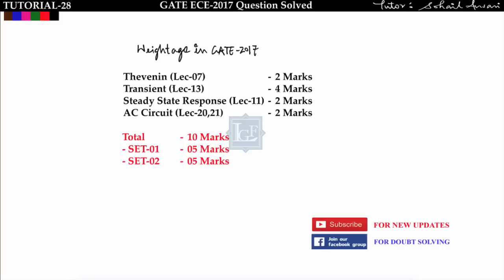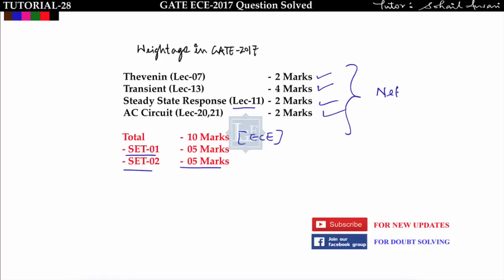To summarize the weightage of topics asked in GATE 2017 EC: Thevenin — 2 marks; Transient — 4 marks; Steady state response (lecture 11) — 2 marks; AC circuits — 2 marks. Total of 10 marks, with 5 marks in Set 1 and 5 marks in Set 2. All concepts have been discussed in the network lectures. If you understood the concepts, please like this video. For doubt solving, join the Facebook group. Thanks for watching.